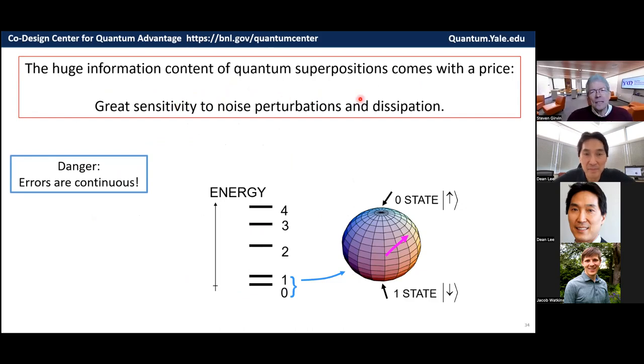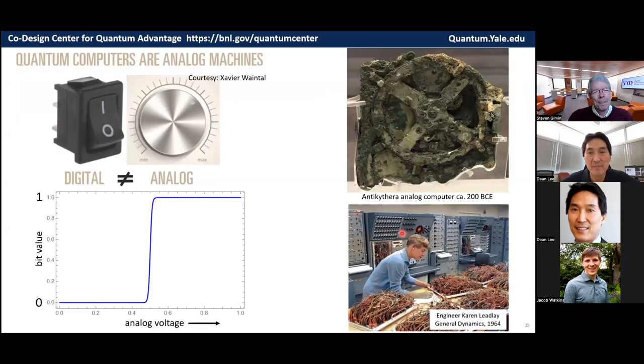OK, so the huge information content that you can build in these quantum superpositions in these superconducting qubits at low temperature comes with a price. And I mentioned it earlier. It's the great sensitivity to noise perturbations and dissipation friction, if you will. And they can continuously perturb the state of the quantum information that is move this little arrow around on the sphere without you knowing about it. You tried to put it on the equator and it moved up to here, maybe. So that's dangerous. The errors are continuous. And in that sense, quantum computers are analog machines.